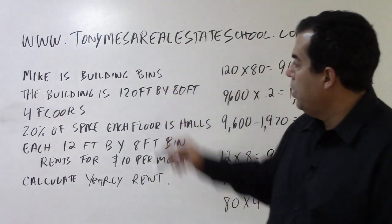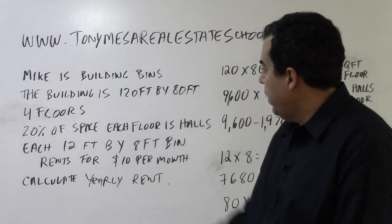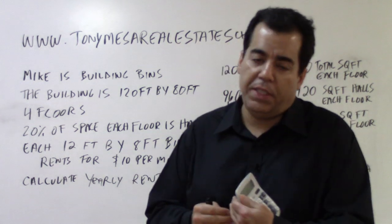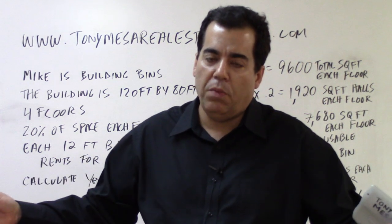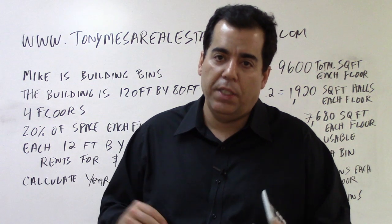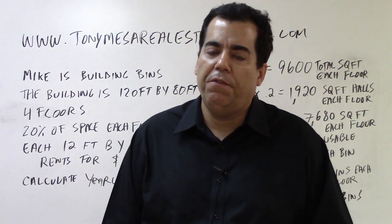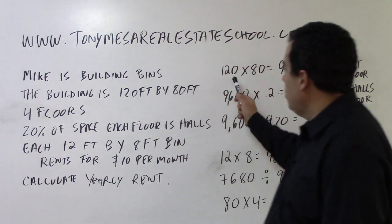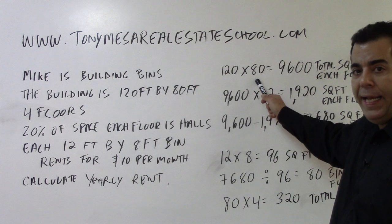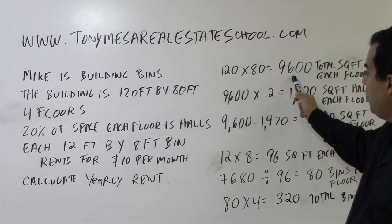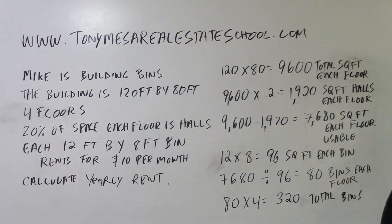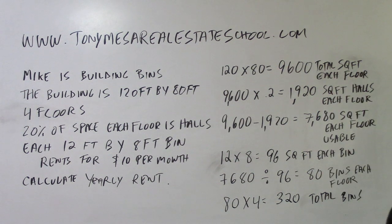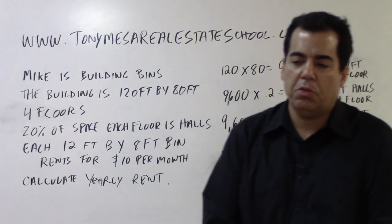So the first thing is he's building these storage rooms, these bins as they're calling them. The building is 120 by 80 — that means it's 120 feet long by 80 feet wide; that has nothing to do with the height. When you say the building is 120 feet by 80 feet, you're talking length by width. So the first thing I do is take 120 feet, multiply it by 80 feet, and that gives me 9,600 square feet. That is the total square footage of each floor.